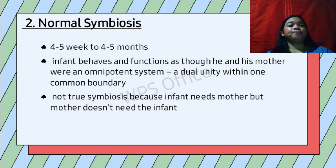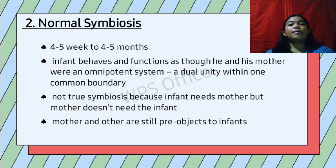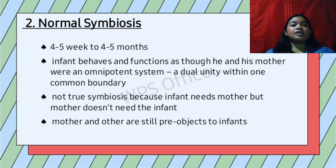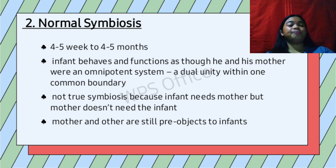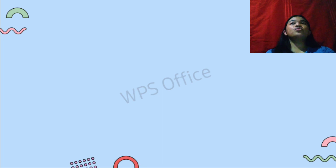Mahler noted that in this stage, the mother and others are still pre-objects to the infants — object relations have not yet begun. Even older children will occasionally retreat to this stage, seeking the strength and safety of the mother's care. In summary, normal symbiosis is the time when infants behave as if they and their mother were one powerful, independent unit.